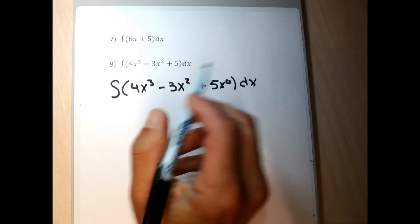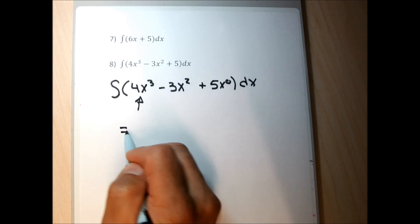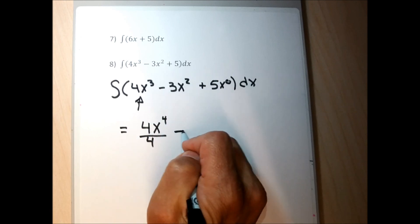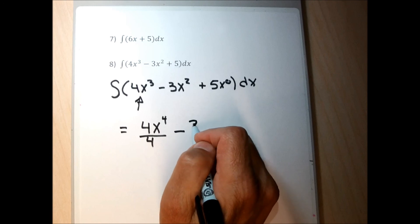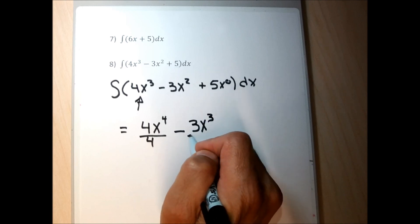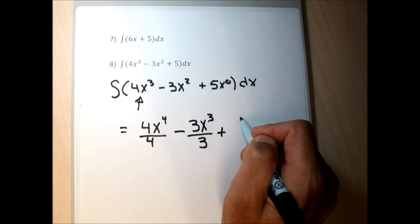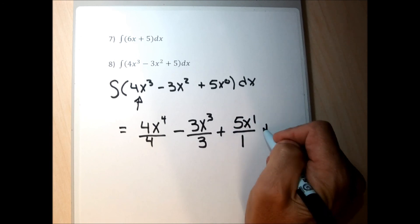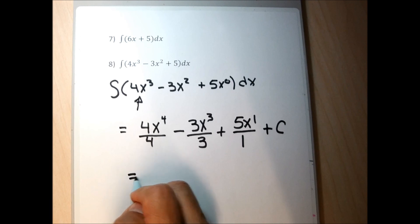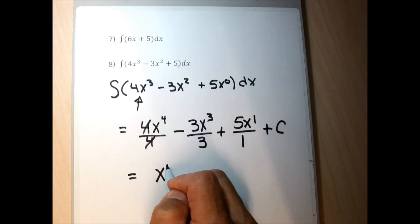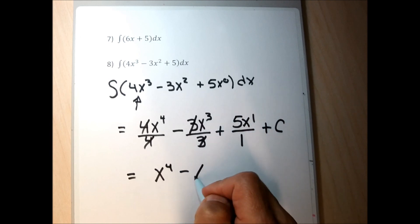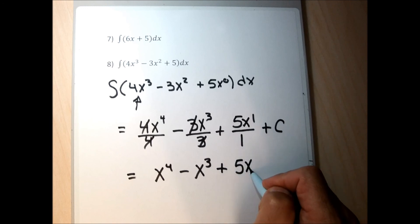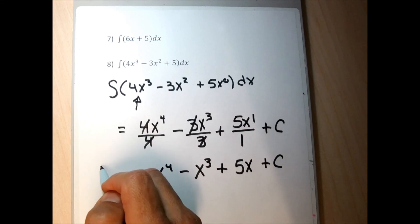For each piece: 3 plus 1 is 4, divide by 4. Bring down the minus sign; 2 plus 1 is 3, divide by 3. For the last piece, 0 plus 1 is 1, divide by 1, and tack on plus C. Simplifying: the 4s cancel giving x to the fourth, the 3s cancel giving minus x cubed, and the last term simplifies to 5x. The answer is x to the fourth minus x cubed plus 5x plus C.